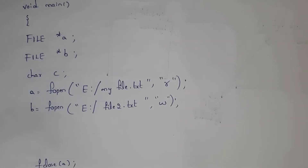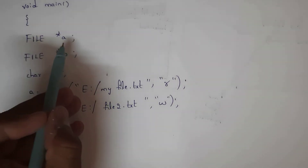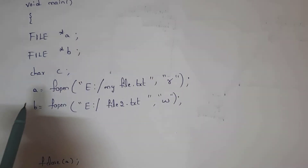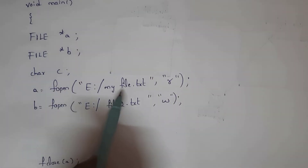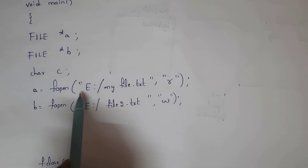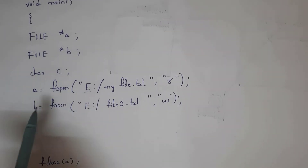This is the C program to copy text from one file to another. Since there are two files, I took two pointer variables: one is a and another is b. I written a equal to fopen of myfile.txt, which is present in local disk E.